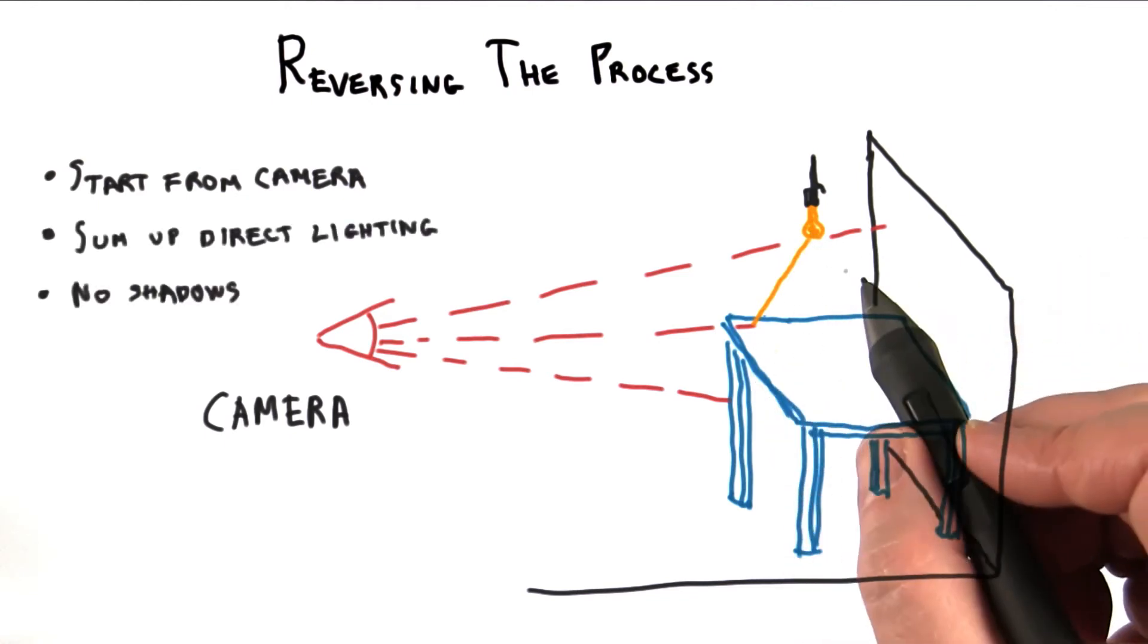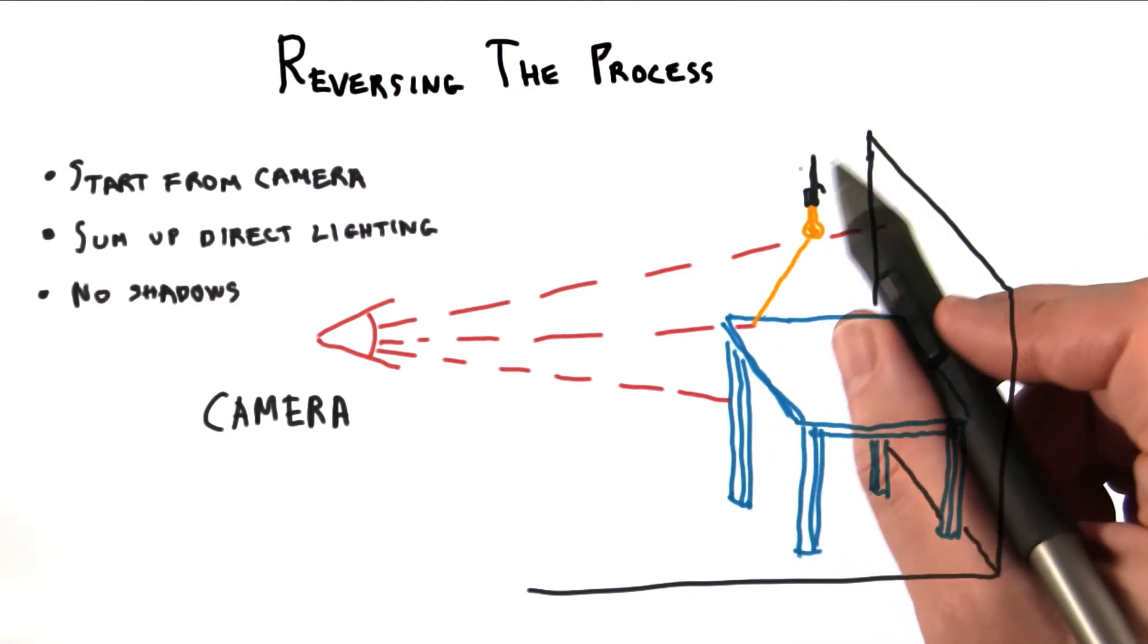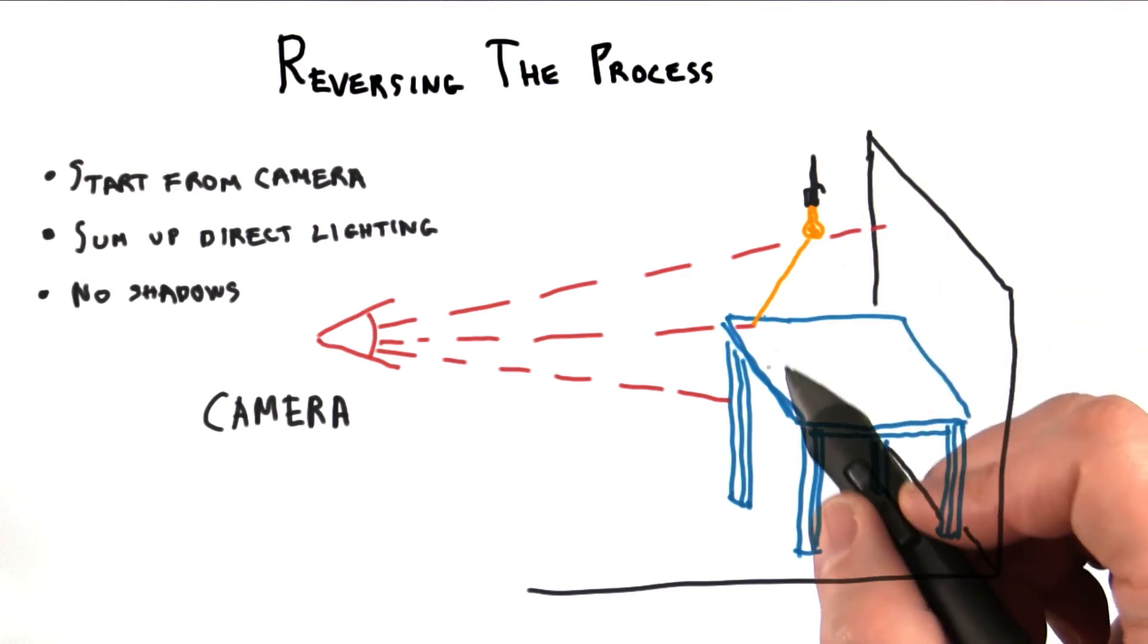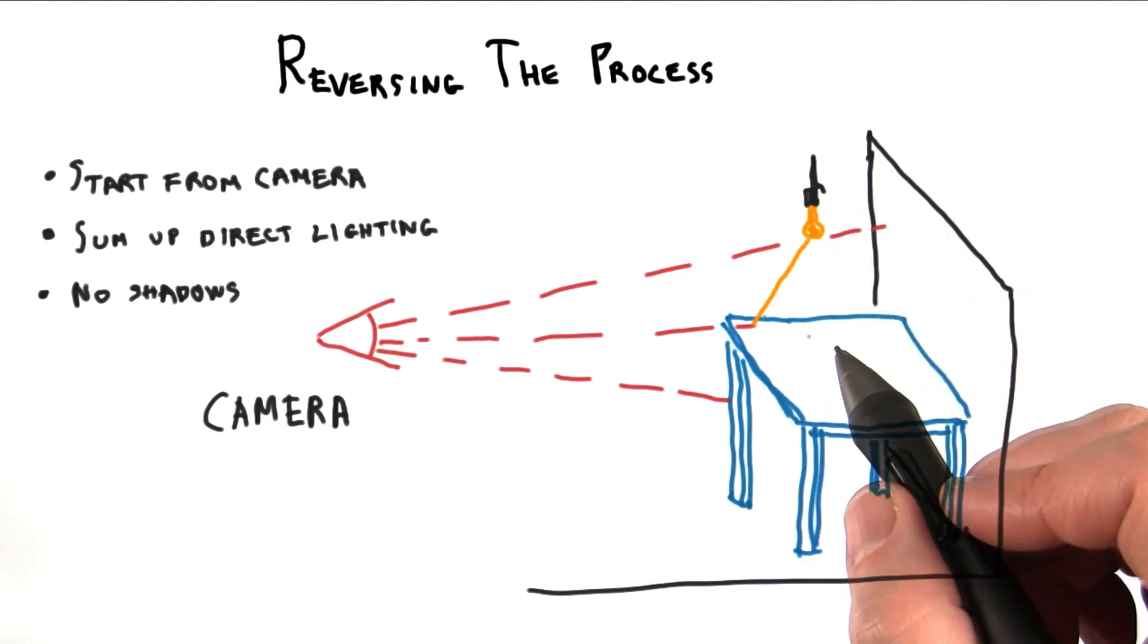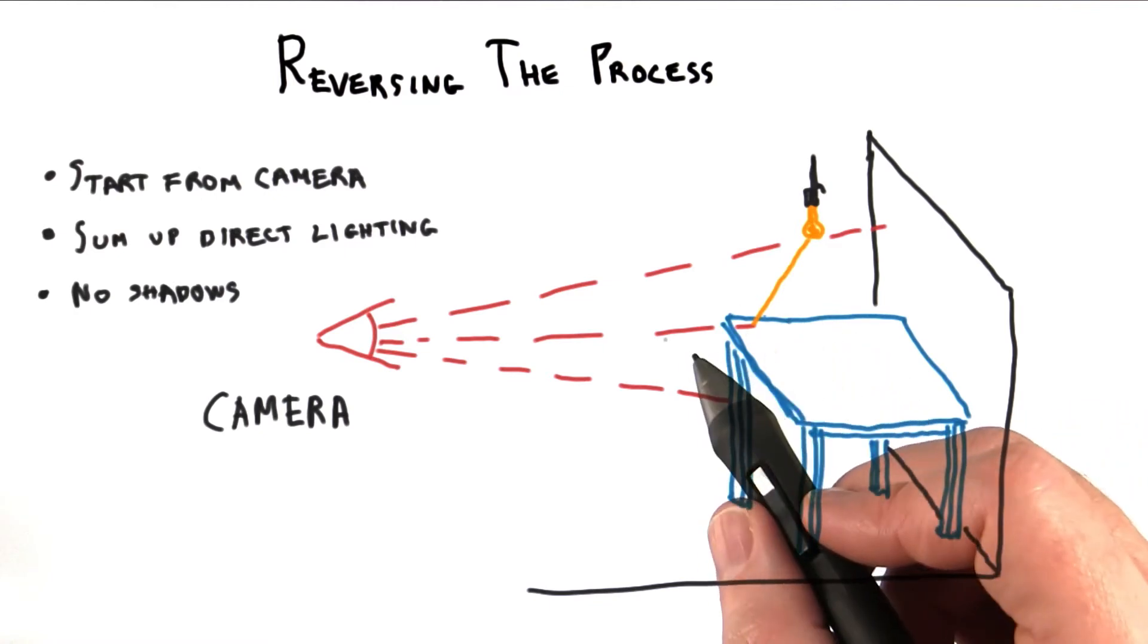Rendering can get even simpler than this. For example, you could do away with lights altogether and just draw each object with a solid color. However, I'm drawing the line there, as lights add considerable realism and perception of 3D to a scene. For example, look at this scene with and without lights.